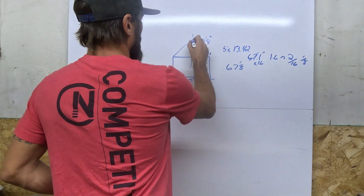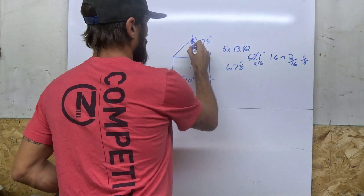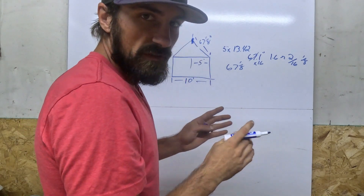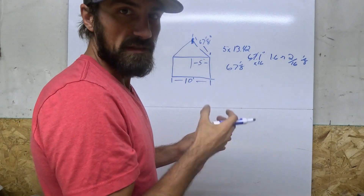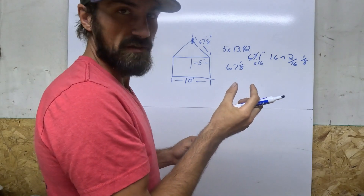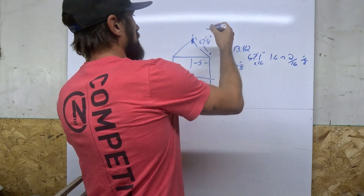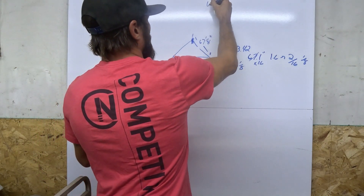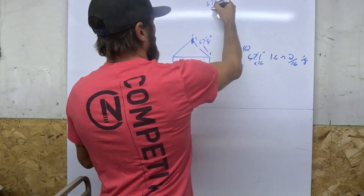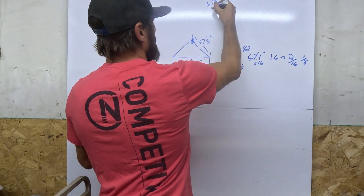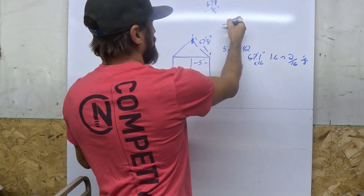Let's say we're using a single two-by-ten for the ridge. Half the width of a two-by-ten is three-quarters of an inch. So we take 67 and an eighth and subtract three-quarters of an inch.